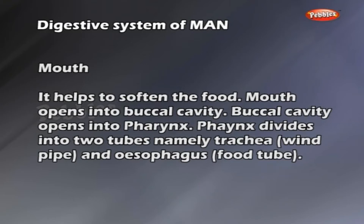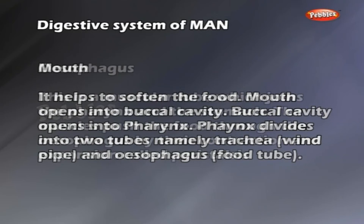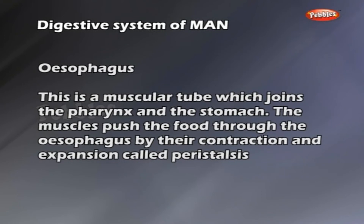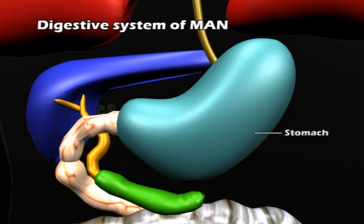The pharynx divides into two tubes: the trachea (windpipe) and the esophagus (food tube). The esophagus is a muscular tube which joins the pharynx and the stomach. The muscles push food through the esophagus by contraction and expansion called peristalsis. The stomach is a J-shaped enlargement of the gastrointestinal tract. The wall of the stomach secretes gastric juice, which helps in the digestion of proteins.